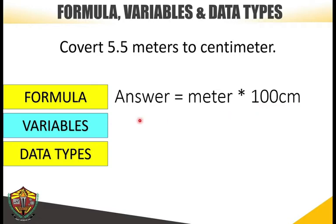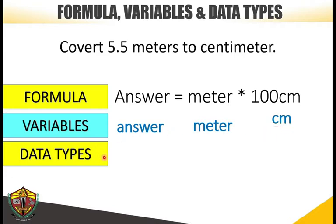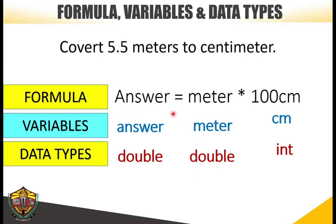Based from the formula, we can now identify the variables. Think of appropriate variable names. In our case, we use variable answer, variable meter, and variable CM. Then, identify the appropriate data type. For variable answer, we use double, because we are expecting a decimal answer. For meter, the data type is double, since the meter contains decimal value which is 5.5. For CM, we use the data type int, because the value is a whole number, which is 100.